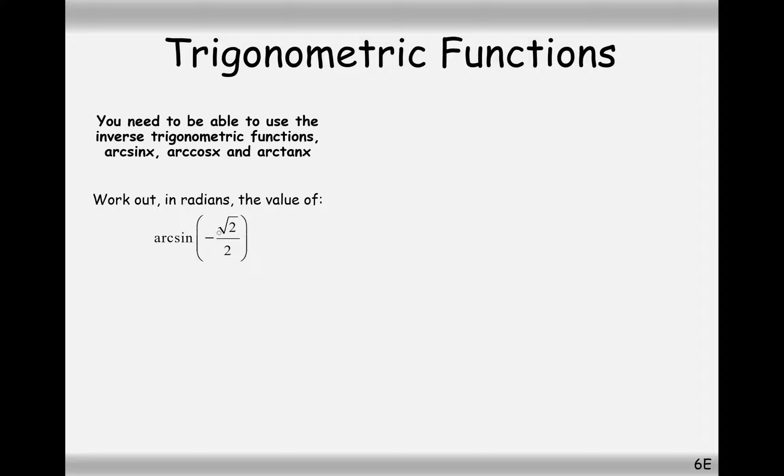Next one, arc sine of minus root 2 over 2. So you can either do this in your calculator, or you can remember that when we do the inverse, it's sine minus 1. And for sine, we can take the negative out. That would be 45 degrees. But because it's on the negative part, it's going to be on the negative part of the sine graph. So it's minus pi by 4.